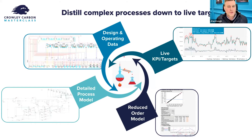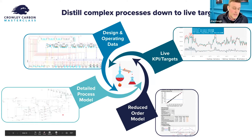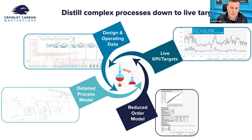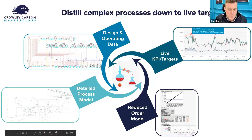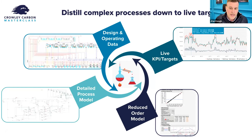The process of doing that is taking the design and operating data — P&IDs, drawings, et cetera — building a detailed process model for whatever the process is. That can be in Excel or using other tools, more complicated tools like Aspen Custom Modeler, and then developing what's called a reduced order model.